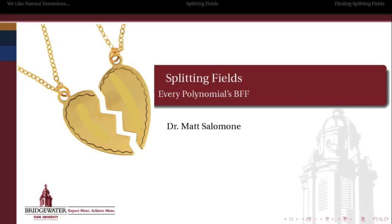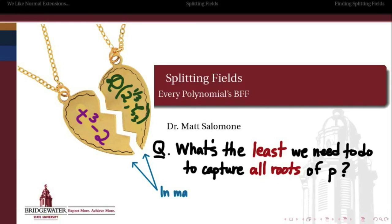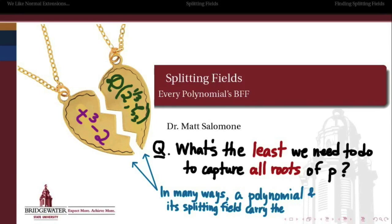We're going to say that the splitting field is every polynomial's BFF. The question is: what is the least that we have to do in order to extend a field to capture all the roots of an irreducible polynomial? If I have something like t³ - 2, what's the least that I have to do to build a field in which t³ - 2 splits? That field is called the splitting field of that polynomial. In many ways, the polynomial itself and its splitting field carry the same types of information, which is why they're best friends forever.